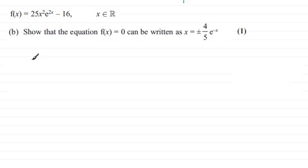Okay, welcome back. Let's start: when f(x) = 0, I've therefore got 25x²e^(2x) - 16 = 0.